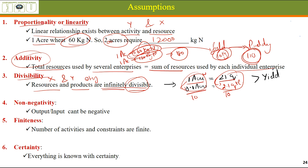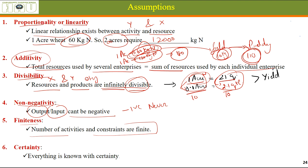The fourth assumption is Non-negativity: output and input cannot be negative. Quantities of labor, output, seed — anything — can never be negative. The fifth assumption is Finiteness: the number of activities and constraints must be finite. We should focus on 2, 3, 4, or 5 activities, not more. Constraints should also be few in number — perhaps 2 to 5 — not 10, 20, or 30, as these make the problem very complex.